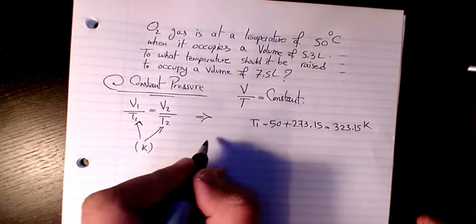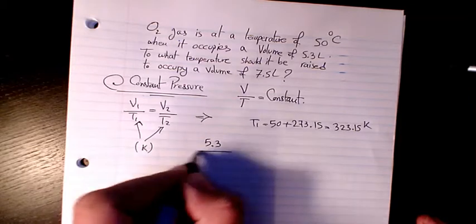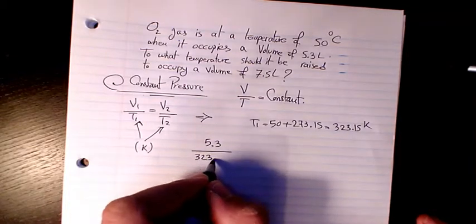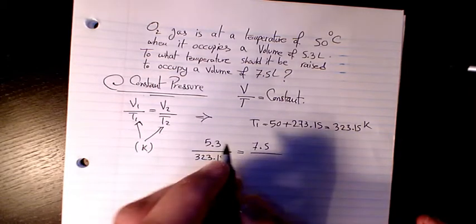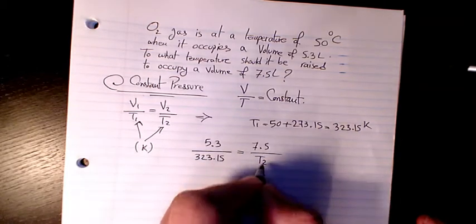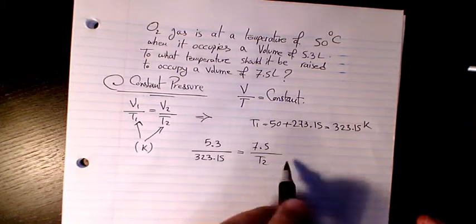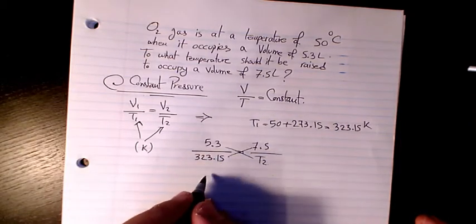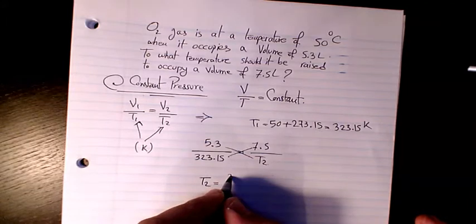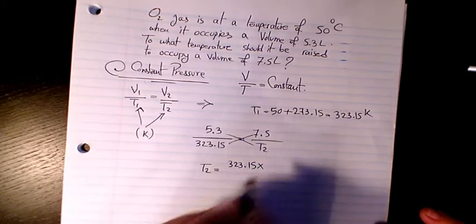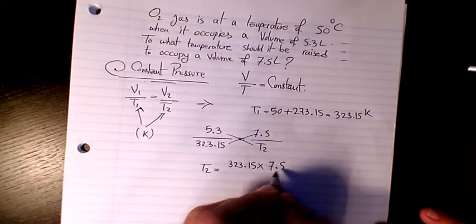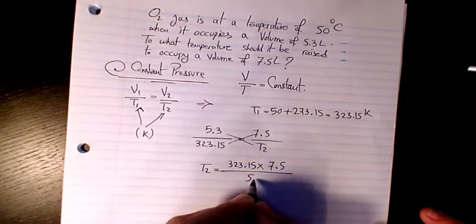V1, which is the initial volume, 5.3 divided by 323.15, and V2, 7.5 divided by T2. We need to find final temperature, so we can do cross multiplication. We can say T2 equals 323.15 times 7.5 divided by 5.3.